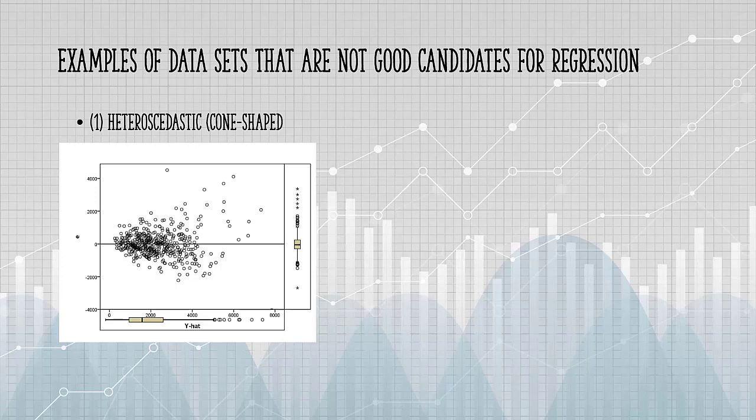This plot of absolute residuals versus y-hat clearly shows a heteroscedastic, that is, cone-shaped pattern.